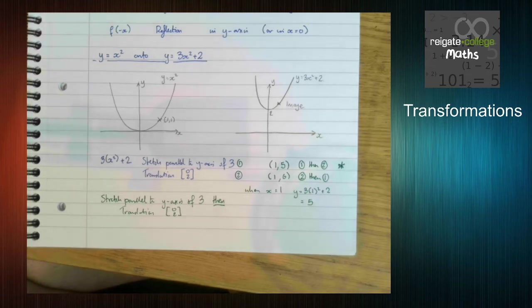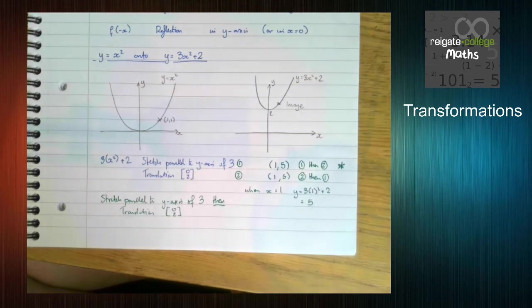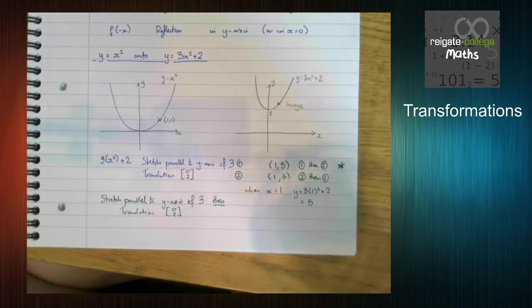If you do it the other way round, it's not the end of the world, it's just the vector has to change. So in order to keep it nice and simple, do it this way round. If they are both in the x direction, it's the other way round. You do the translation first, then the other bit of information.